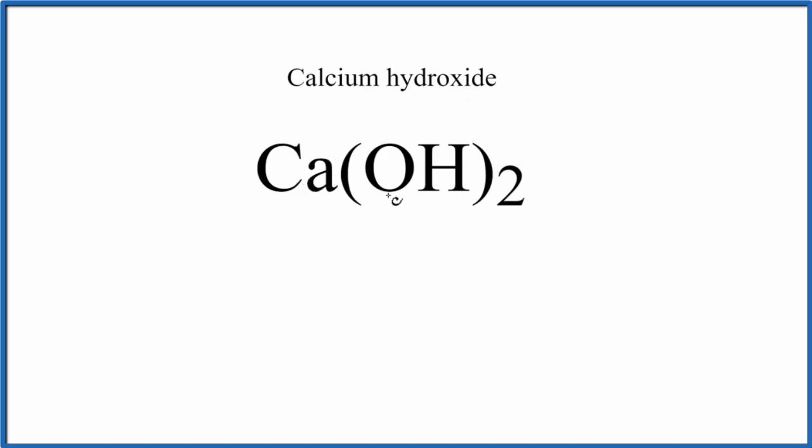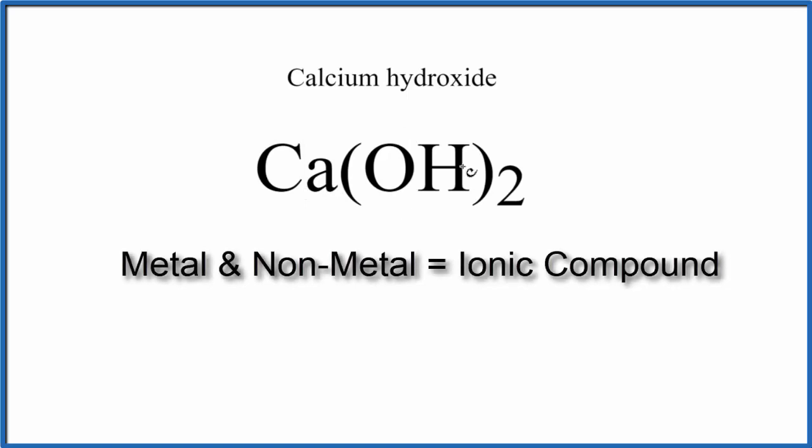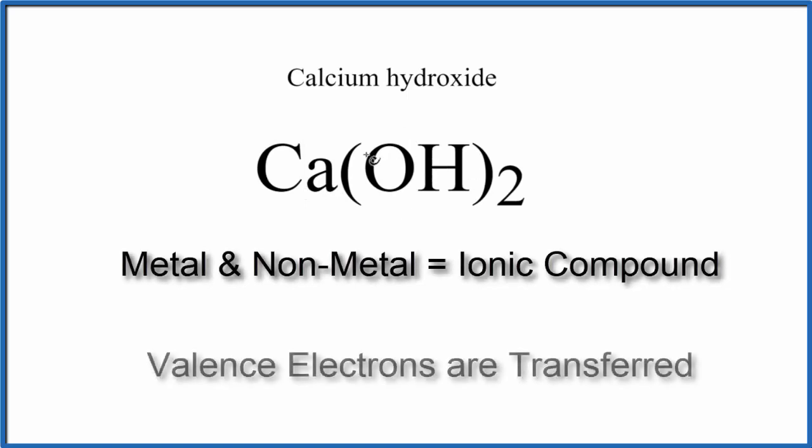Calcium is a metal, and then oxygen and hydrogen, those are non-metals. In fact, they're a group of non-metals called a polyatomic ion, it's the hydroxide ion. Because calcium is a metal, and then we have these non-metals, that makes it an ionic compound, and the metal is going to transfer valence electrons to the non-metals.